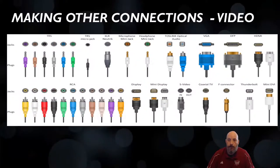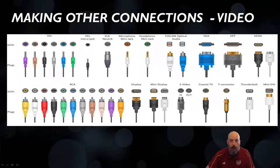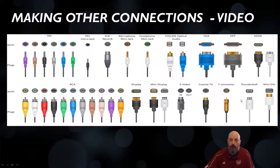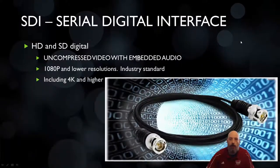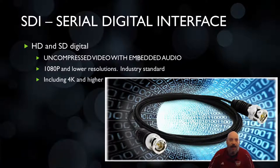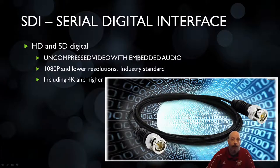Looking over at video, there's again a wide variety of plugs. With RCA you have a whole spectrum of colors — black, red, yellow, white. You also have TRS, microphone jacks, and newer things like S-Video, DisplayPort, HDMI, and Thunderbolt. There's a lot of variety, especially with digital audio and digital video. This leads to a new type of signal called SDI — Serial Digital Interface.